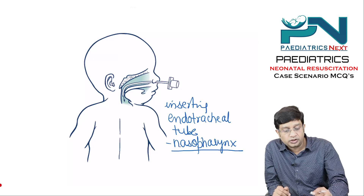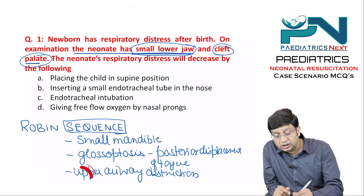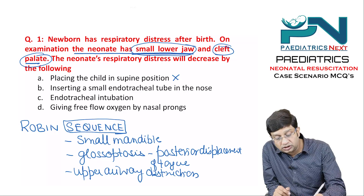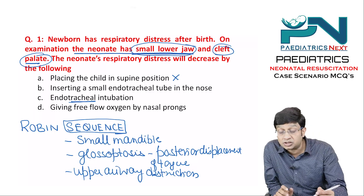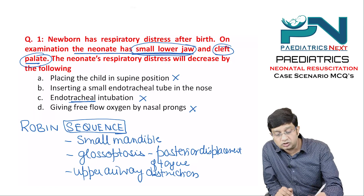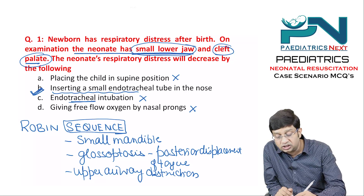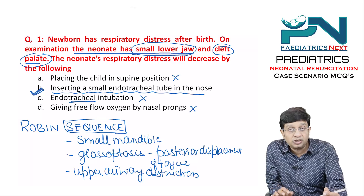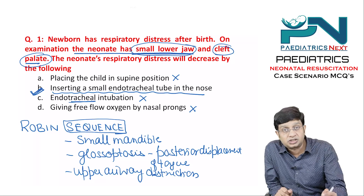Regarding the answer choices: placing the child in supine position will not help. Endotracheal intubation — placing the tube into the trachea — can sometimes be difficult. Free flow oxygen does not carry significance here. The most appropriate answer is inserting a small endotracheal tube in the nose into the nasopharynx, as this appears to be a case of Robin sequence.